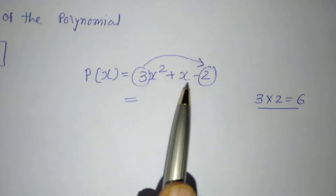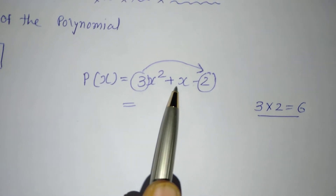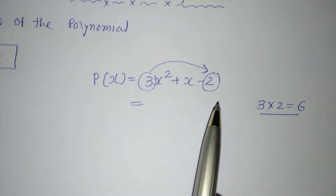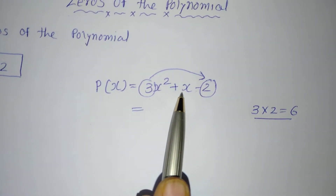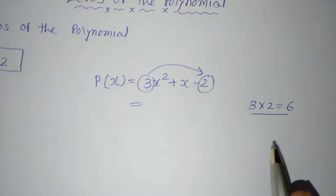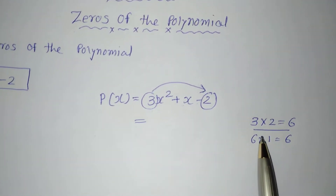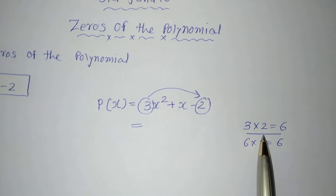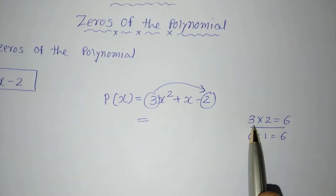We got 6. Now we need to factorize 6 in such a way — here you can see the sign is minus — so the subtraction of both those factors must equal the middle term, which is 1x, or simply 1. There are various factor pairs: 3 × 2 = 6, or 6 × 1 = 6. We need the subtraction of both factors to equal 1. So 3 − 2 = 1, therefore we will take the factor pair 3 and 2.